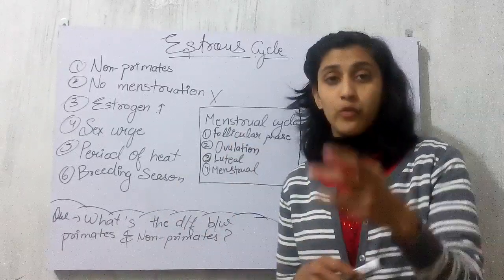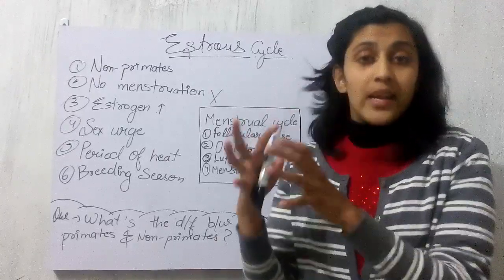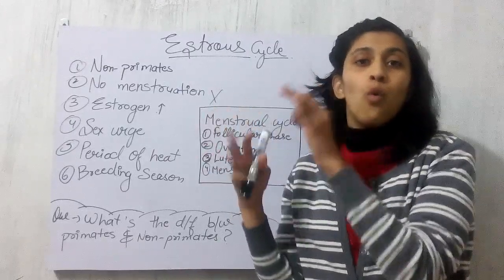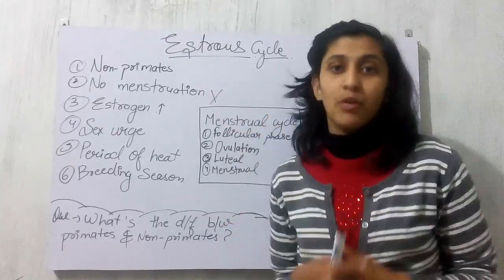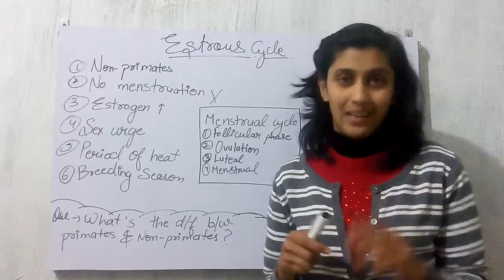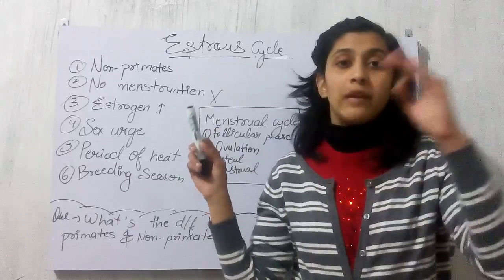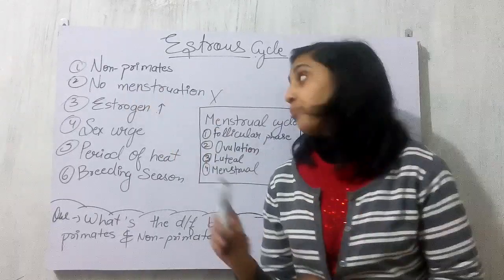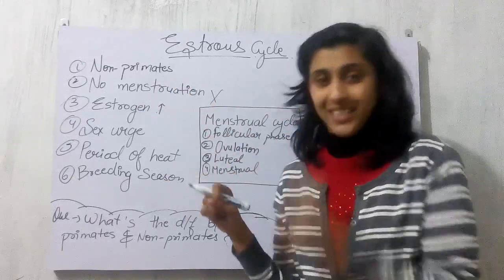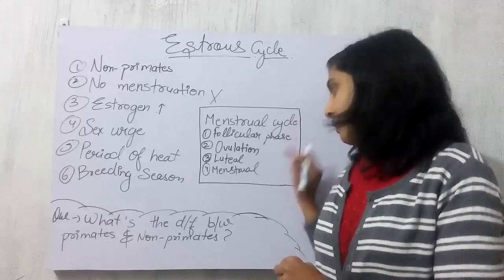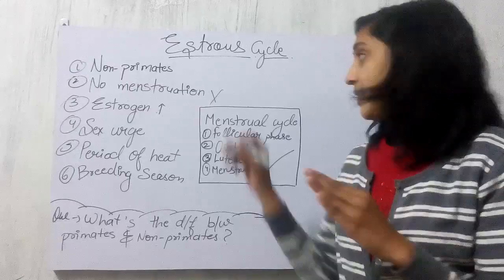Individuals undergoing the menstrual cycle are primates. Now, females of those who undergo the estrous cycle are known as non-primates. In the estrous cycle, point number one: it is followed by non-primates. Point number two: there is no menstrual bleeding at the end of this cycle, unlike the menstrual cycle where bleeding occurs at the end.